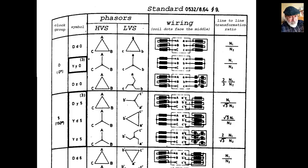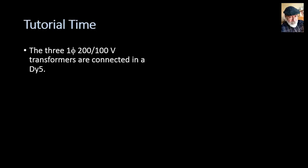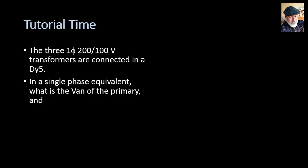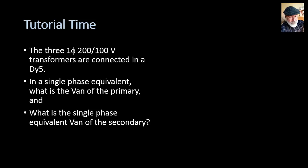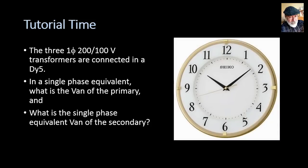The YZ5 connection will be discussed in a different video. So the standard connections are YY0, DY5, and YD5. Tutorial time: we have three single-phase transformers each rated 200/100 volts, connected in a DY configuration. For the single-phase equivalent of that three-phase connection, what is the voltage A-to-neutral of the primary and what is the single-phase equivalent voltage VA-to-neutral of the secondary? Let's look at the clock diagram.